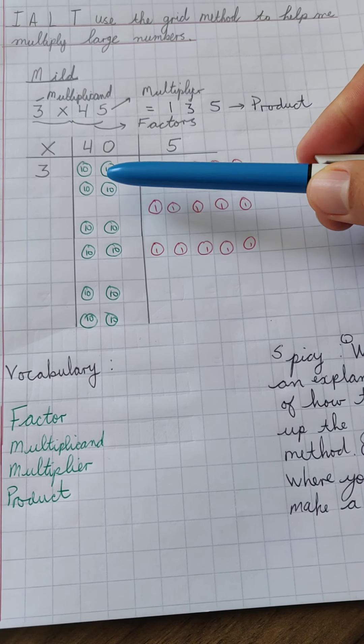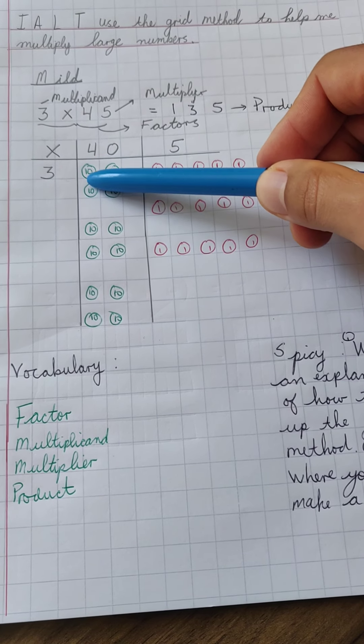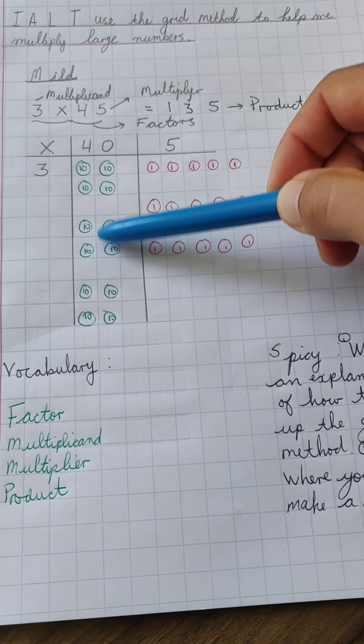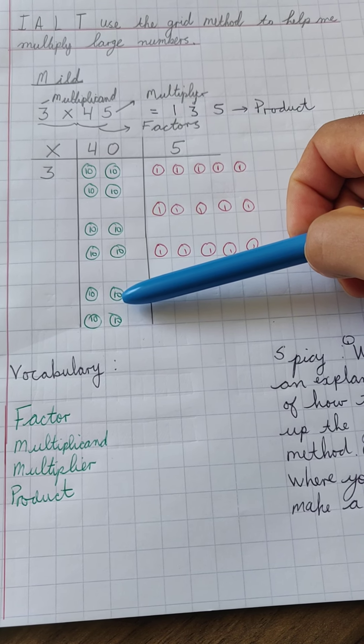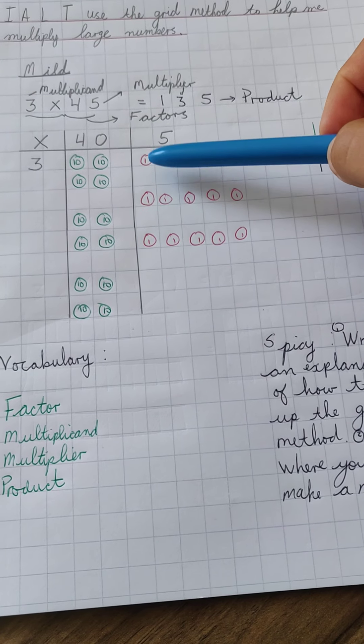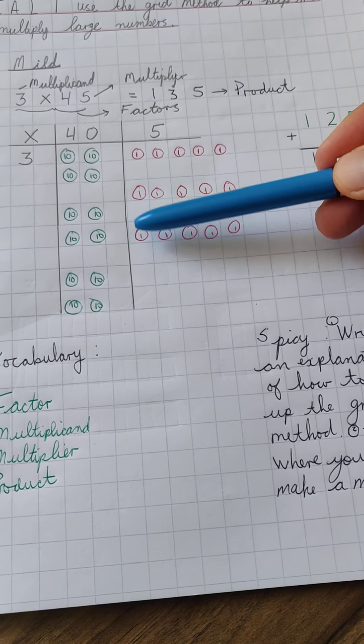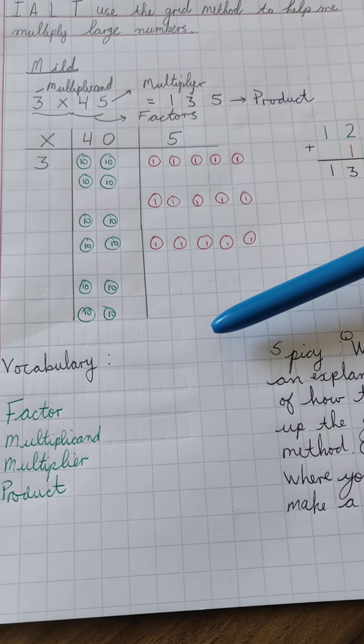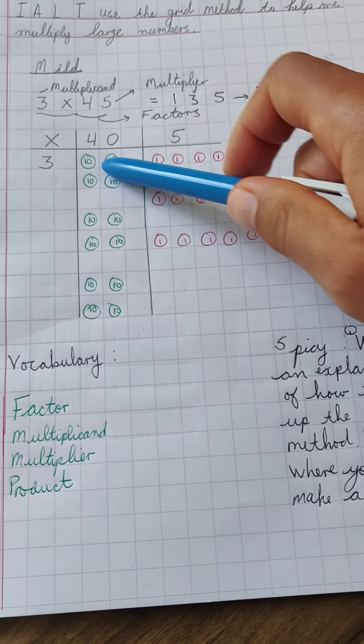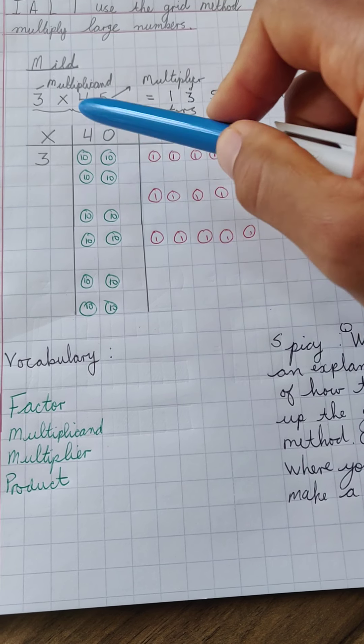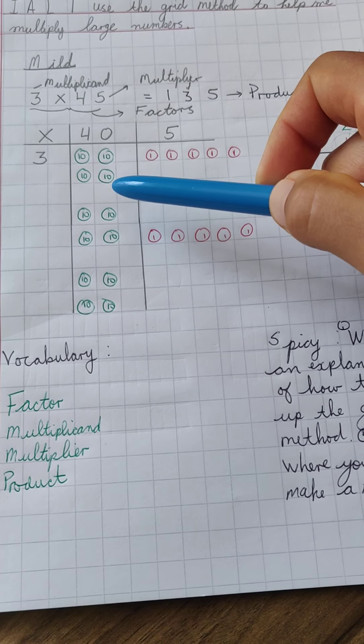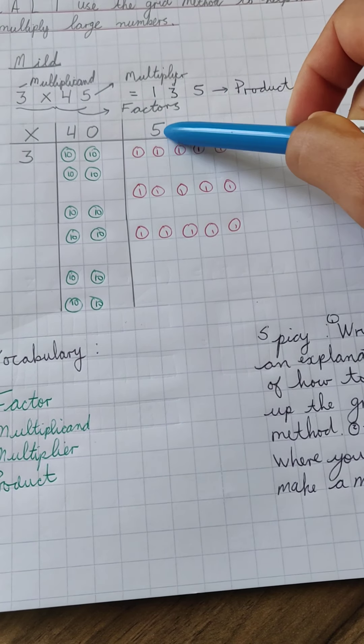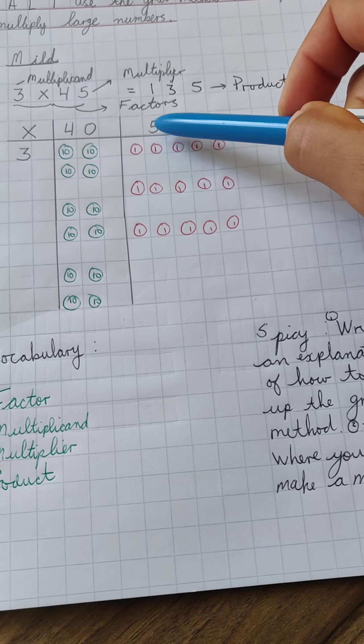Now as you can remember from when we were in school we use counters. So in this case these are my ten counters and then the value of these are one. Now I have separated these in this way and I will explain why I have done that. Because originally I only have 40 so that's 10 plus 10 is 20 plus 10 is 30 plus 10 is 40. So that's what I have here originally in my multiplier. And I partition that into 40 and into 5 as well.